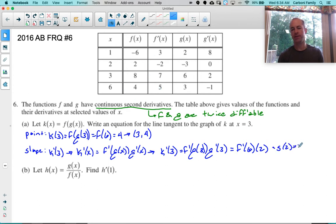Once you have your point and your slope, your tangent line will be Y minus Y coordinate equals slope times X minus X coordinate.